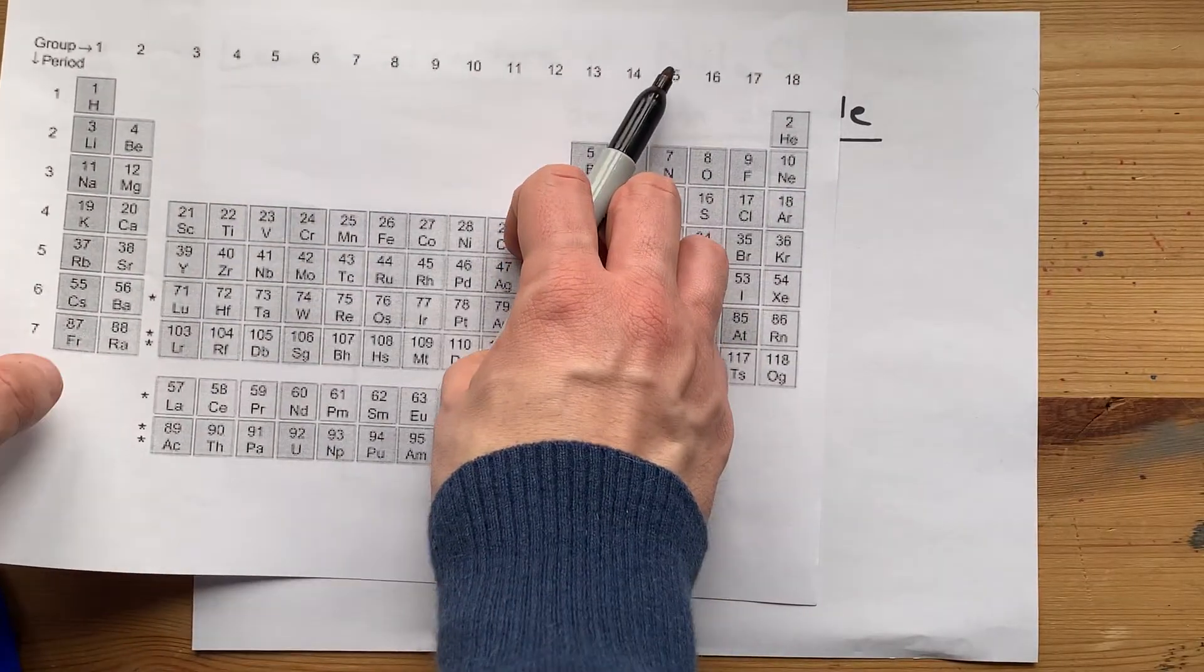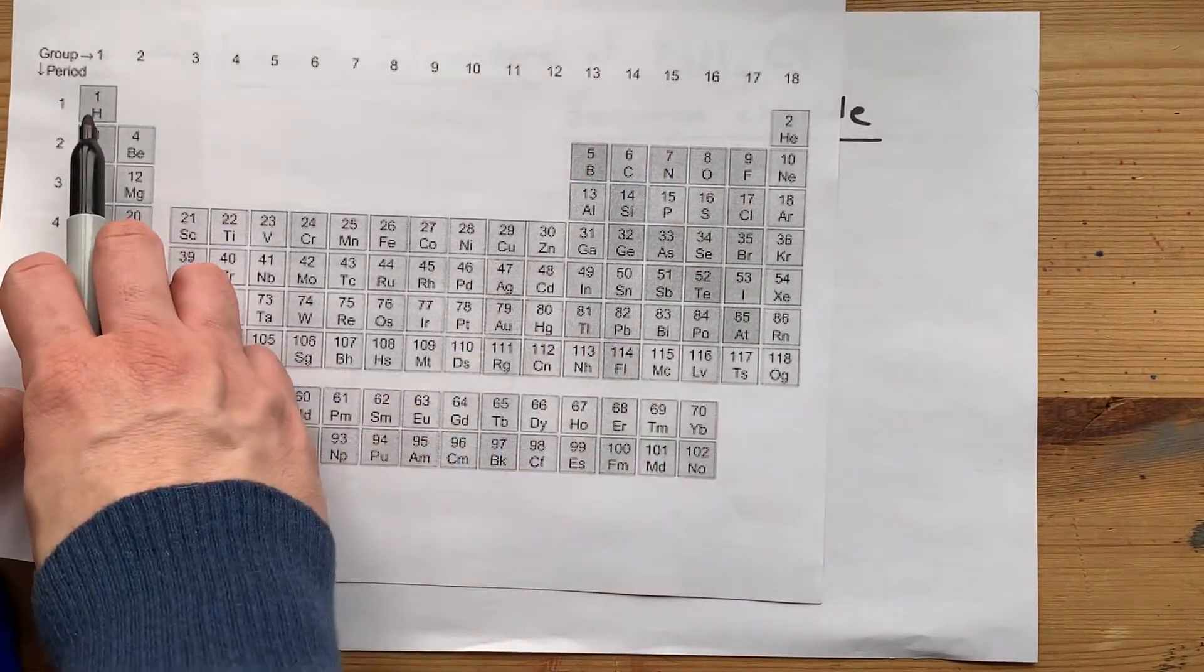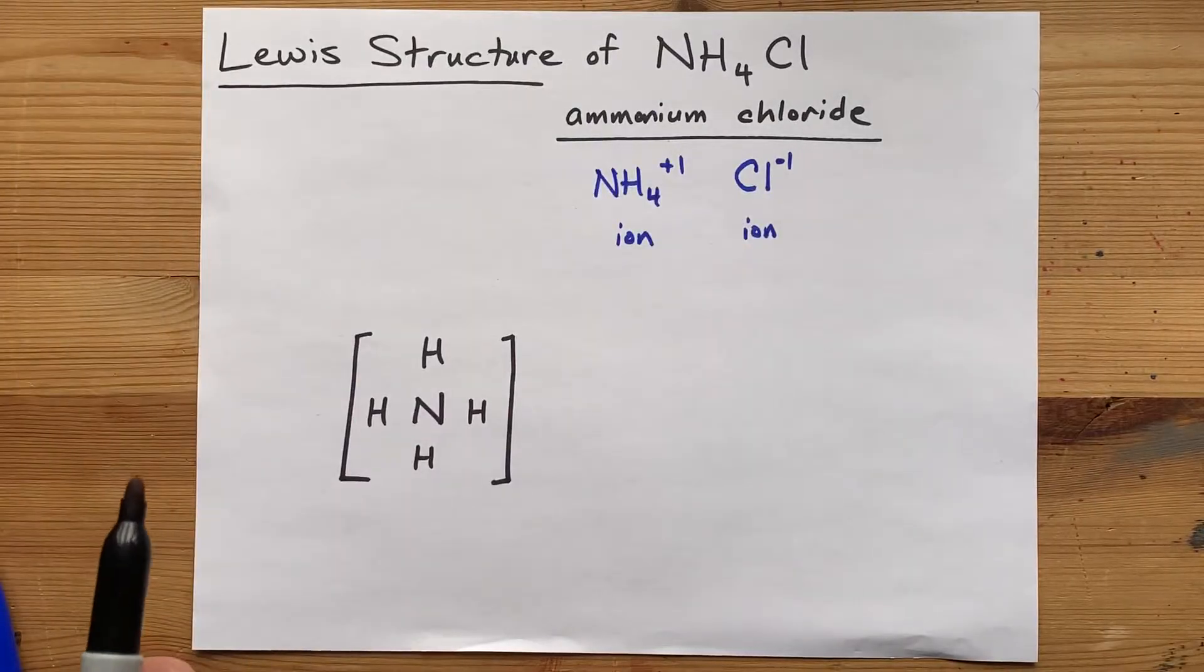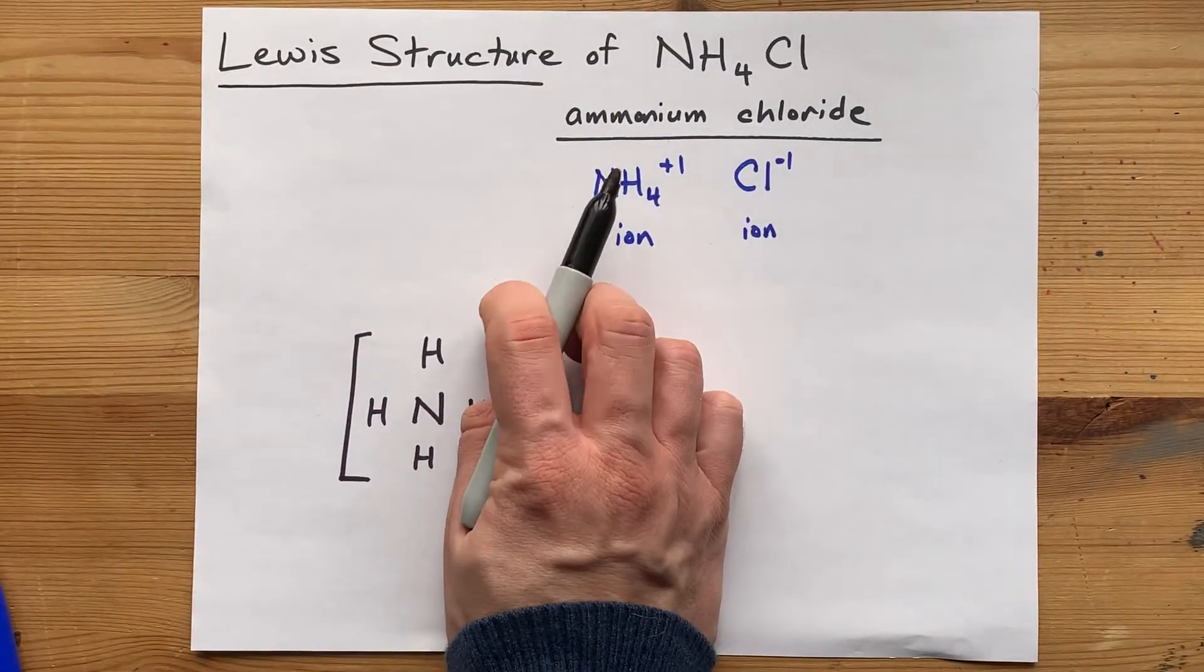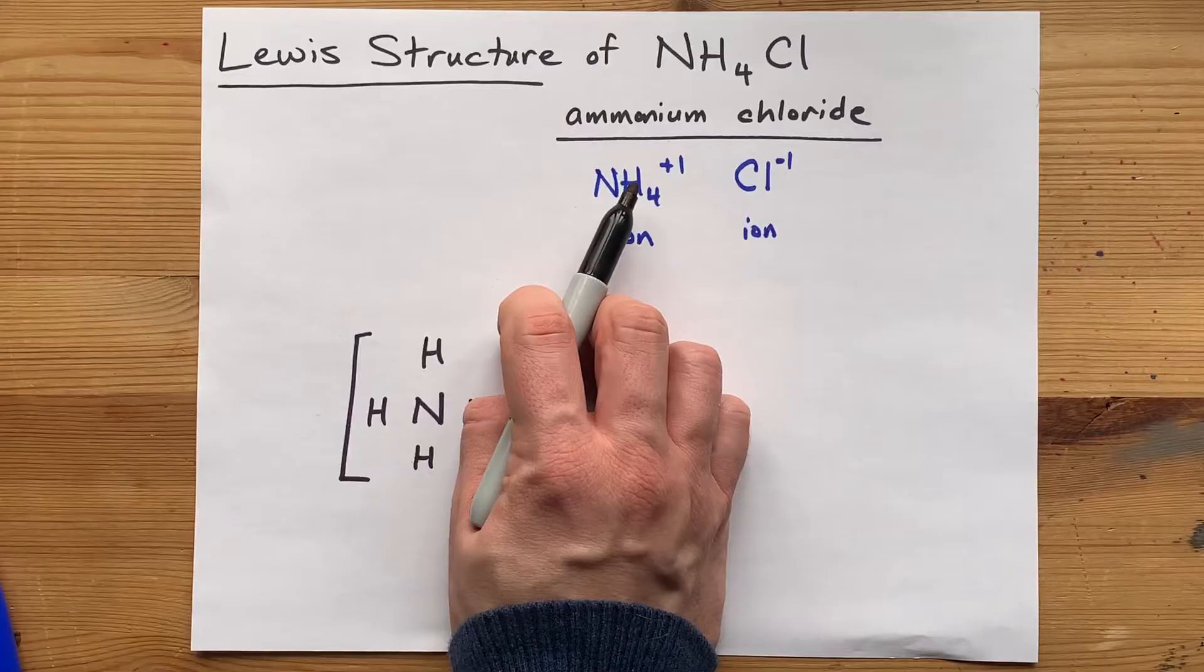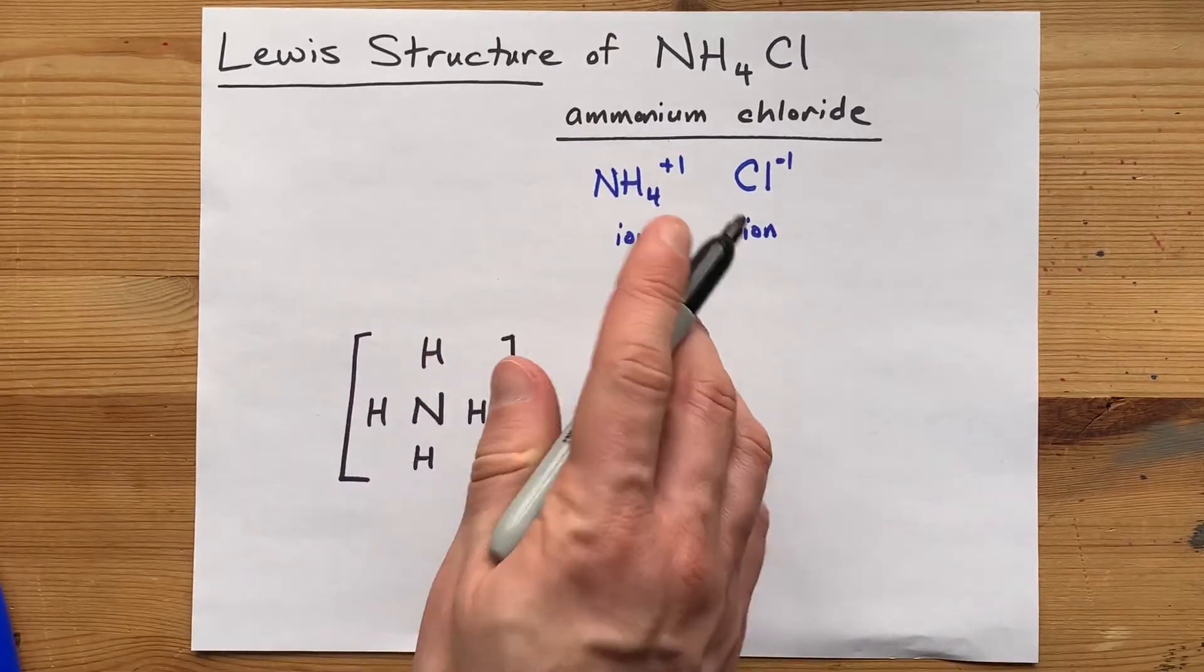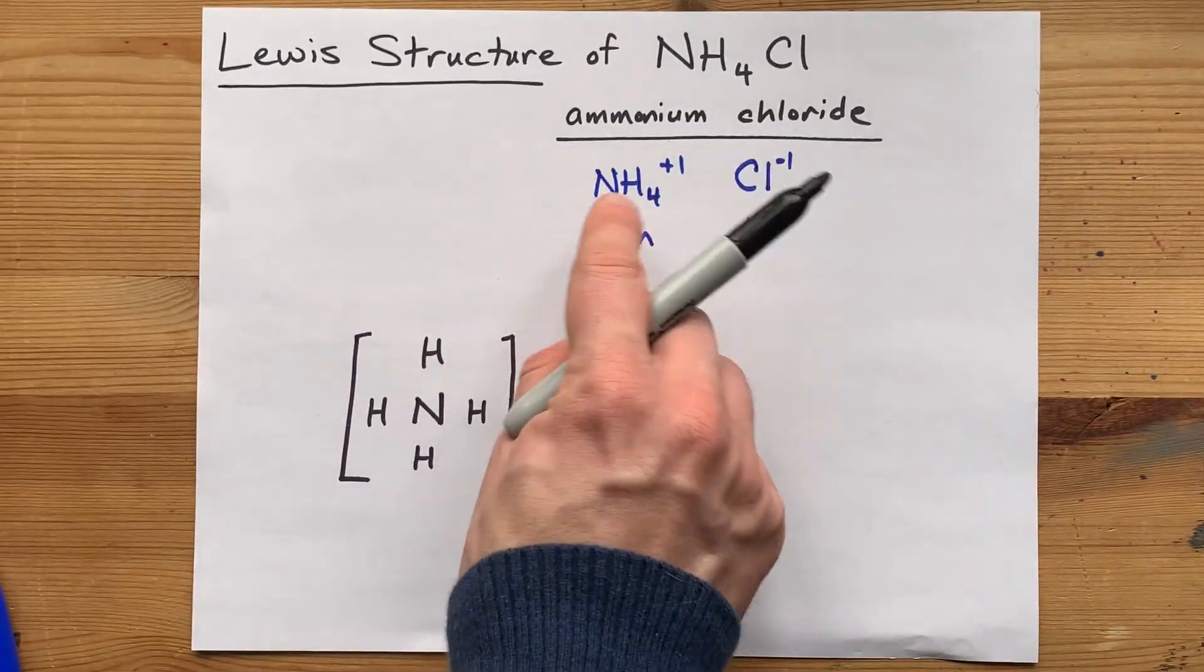Nitrogen brings five electrons, and hydrogen brings one electron each. So, this brings five, and you have four of these hydrogens which bring one each. That's nine valence electrons.